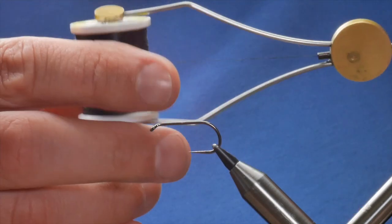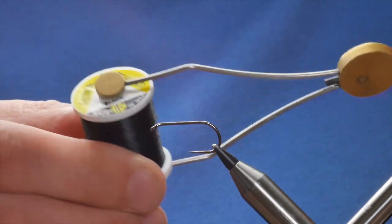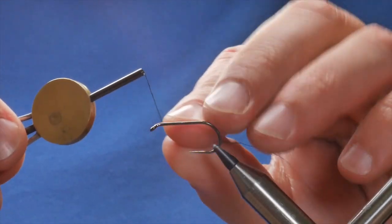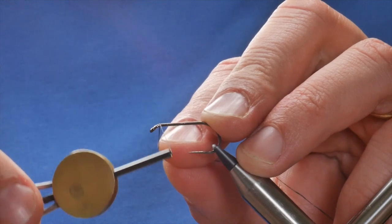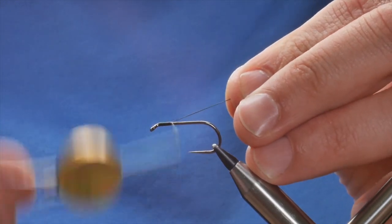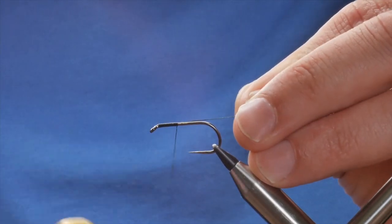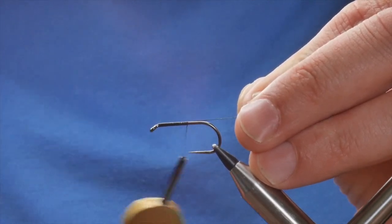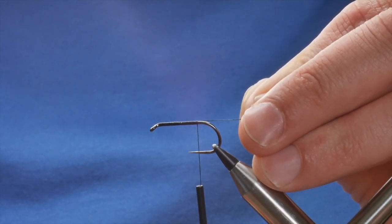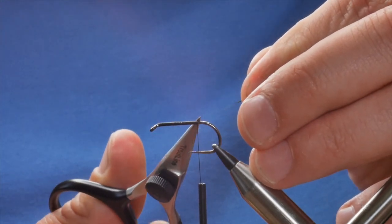The thread I'm going to be using today is the UTC thread, 140 denier in black. First thing I'm going to do is unravel some of my thread and get plenty of wax on. Start about a couple of millimeters back from the eye of the hook, then use my rat's tail to help guide down the thread. I'm going to bring it back to approximately where a barb would be and take away the waste.